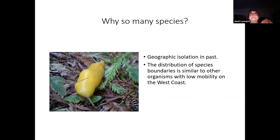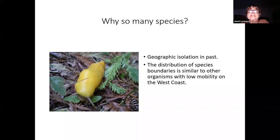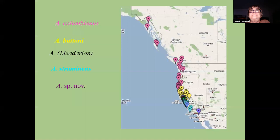So the first question we want to ask is why are there so many species of banana slugs? The answer in most cases of speciation in the world is geographic isolation. Through geologic processes, populations become isolated, they begin to evolve independently, and eventually separate into species. We're pretty sure this is the case with Areolimax because the species boundaries and distribution is very similar to what we see in other organisms with low mobility found on the west coast, such as some salamanders, many plants, and some other gastropods.